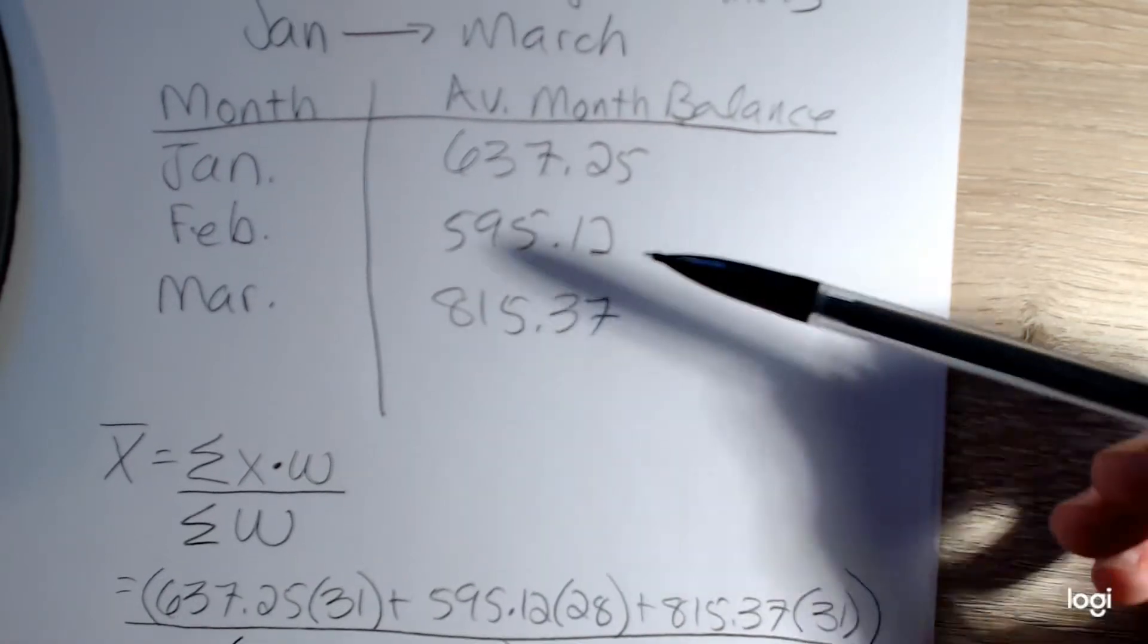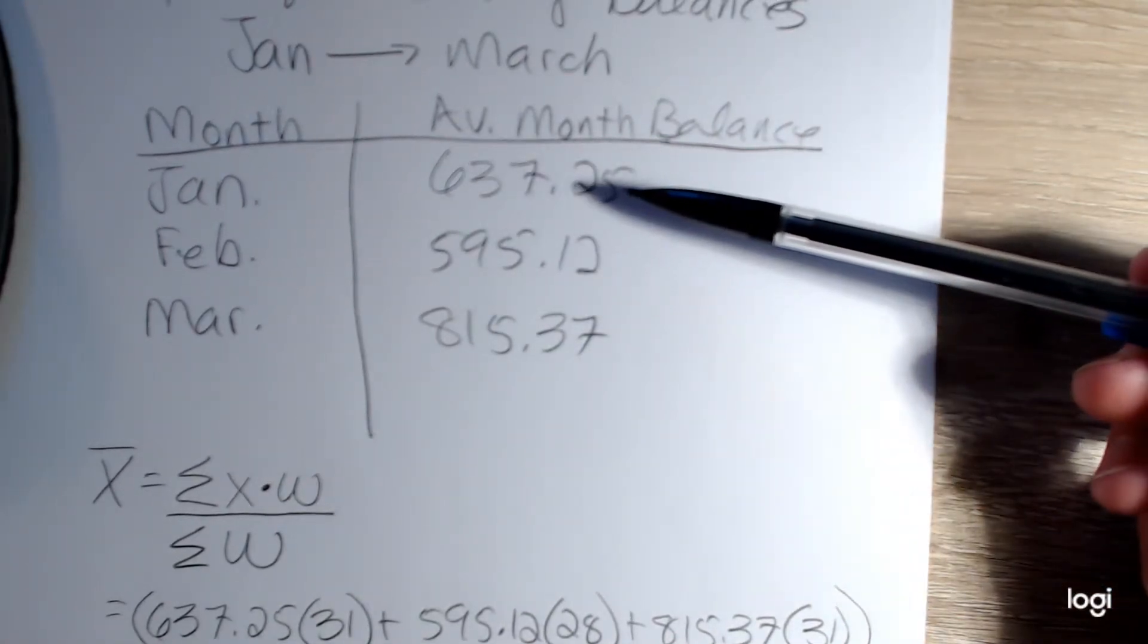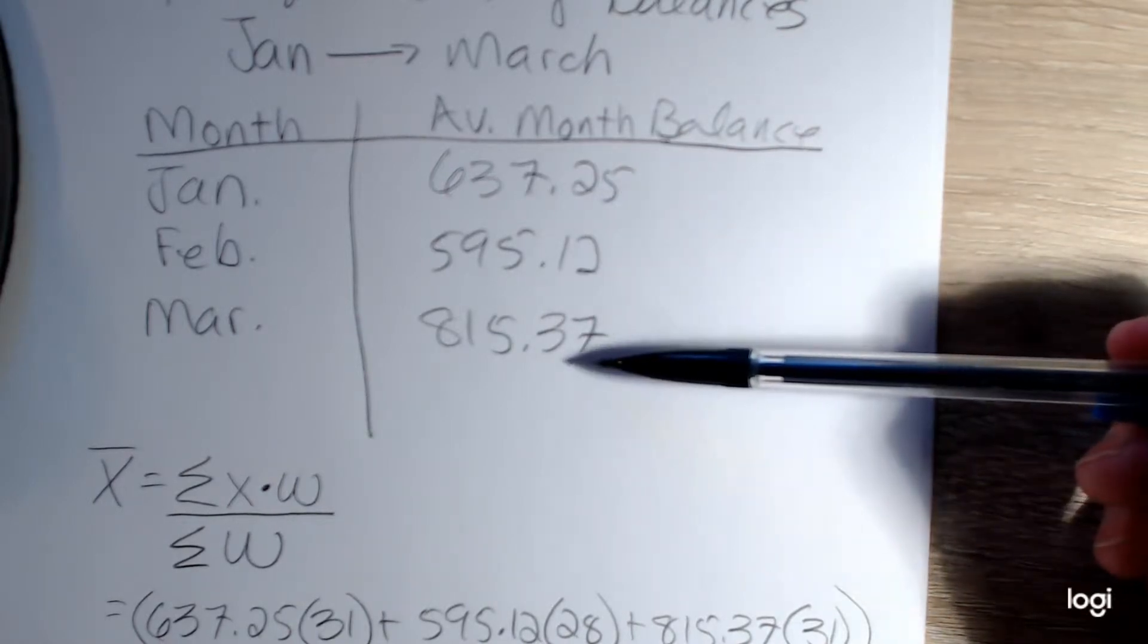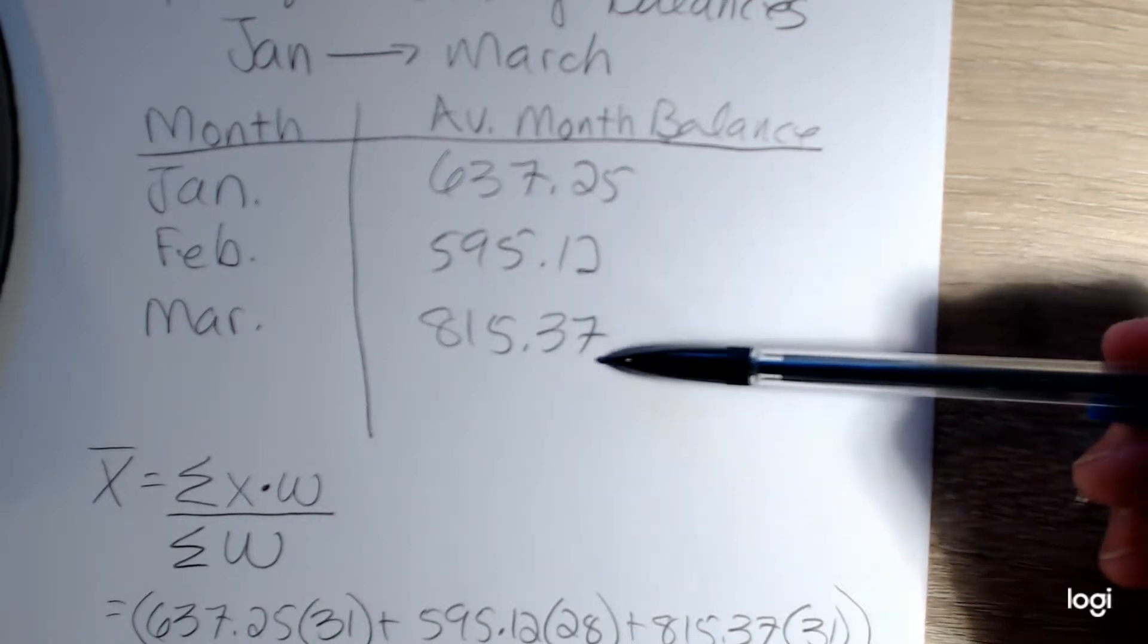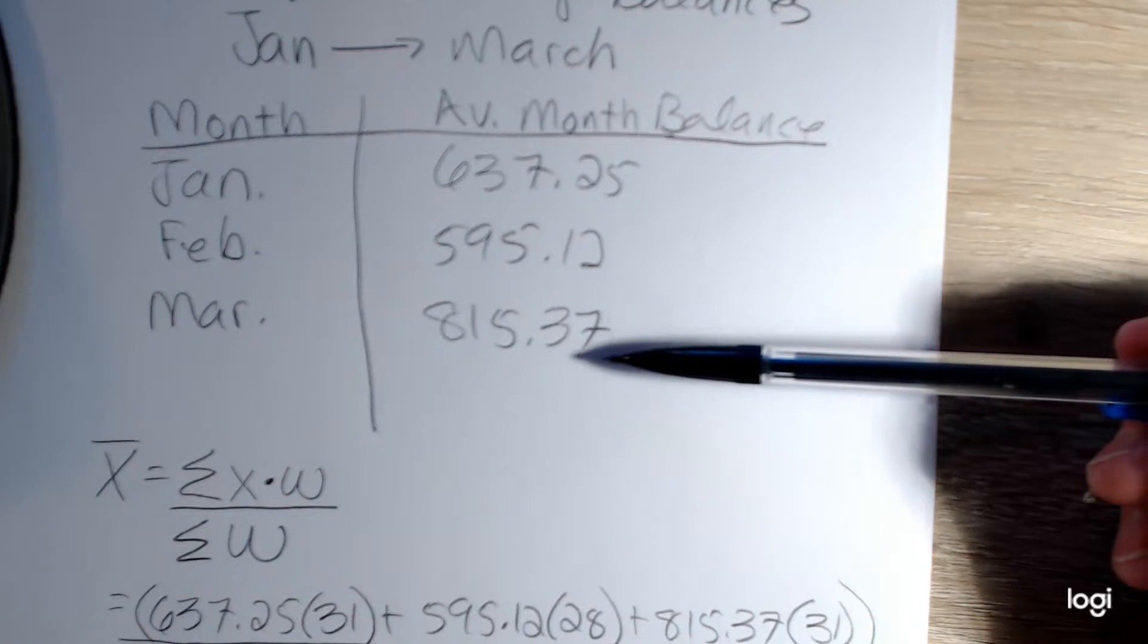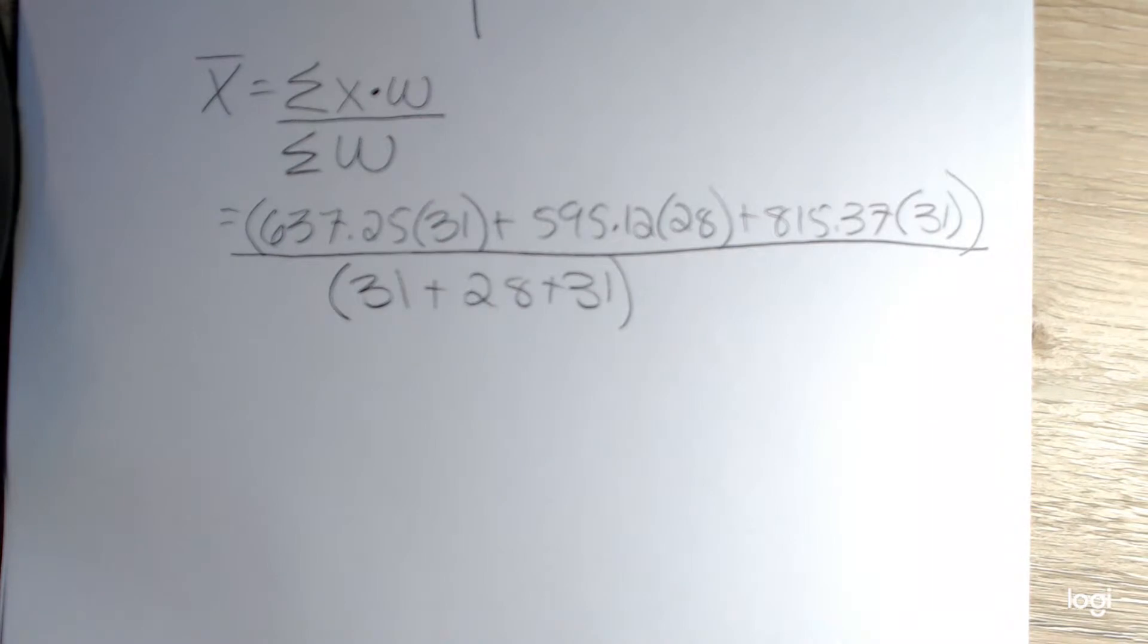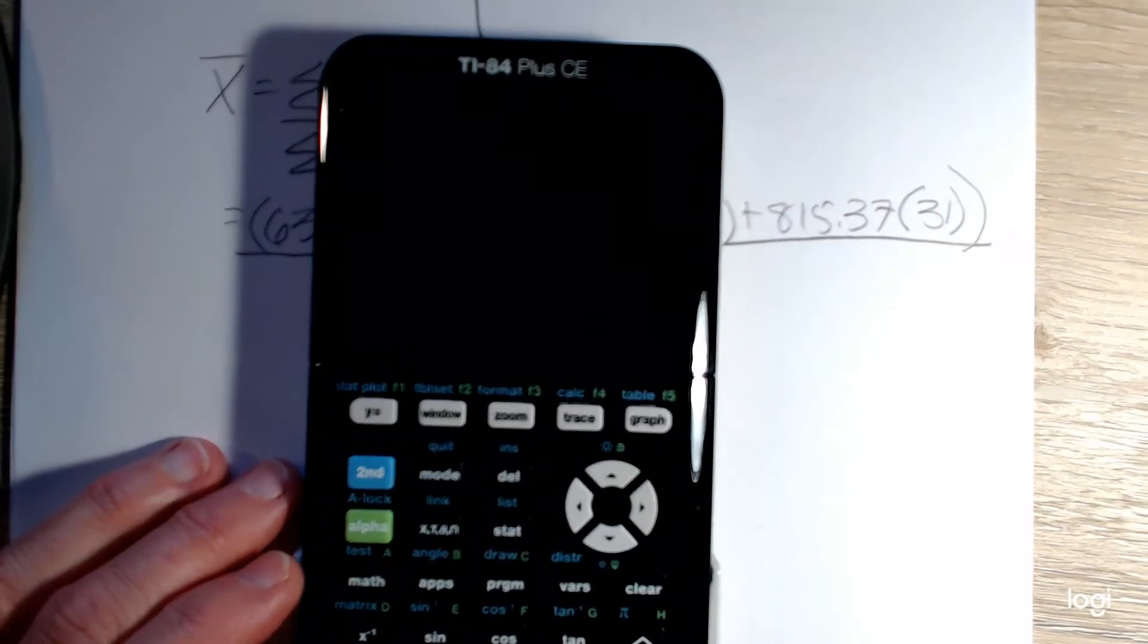Now, it would be incorrect when I'm talking about finding an average in this situation to add up these values and divide by 3. This is not a case where we have a simple arithmetic mean because these values aren't equally likely or equally weighted. So getting this information into my calculator, first I have to turn it on.